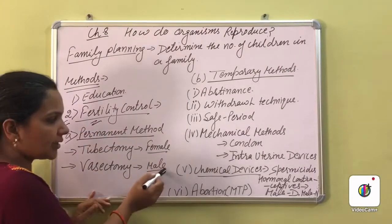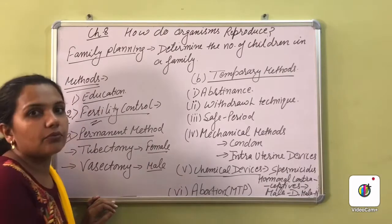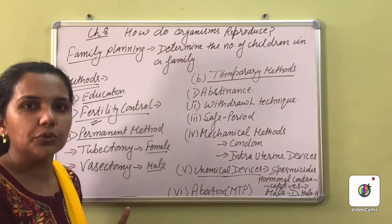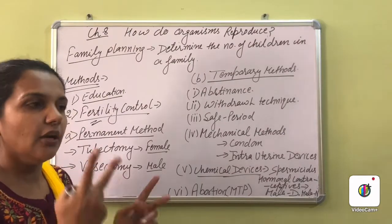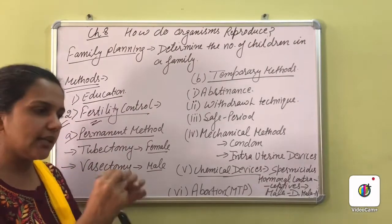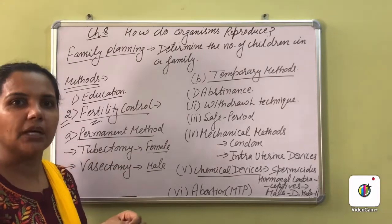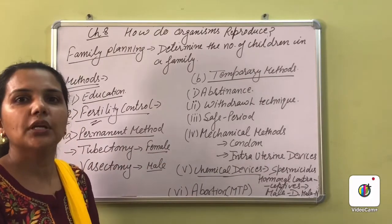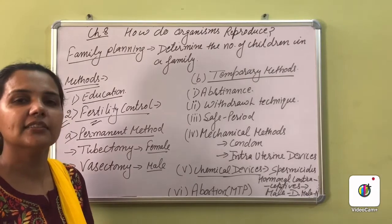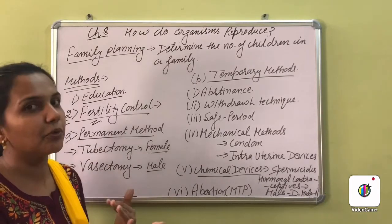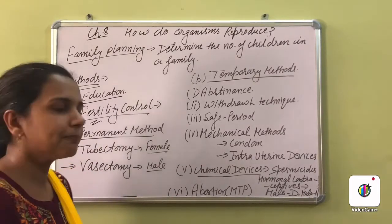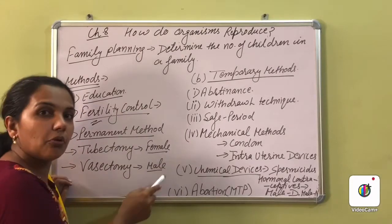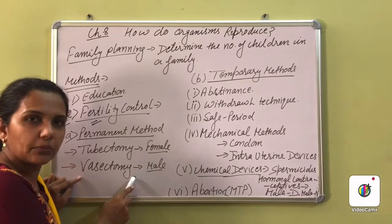In the male case, the vas deferens — part of the male reproductive system — is cut and the two ends are tied, so that sperm cannot flow. If there are no sperm, there is no fertilization, and therefore no zygote, no embryo, no fetus, no baby. This surgical operation in the male is called vasectomy.